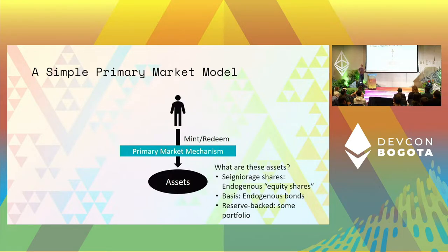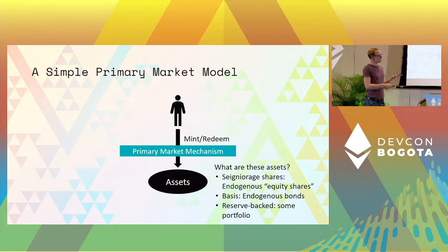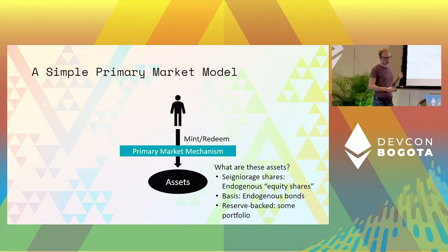What are these assets? Well, that depends on your design. It could be many different things. In a seigniorage share design, it's basically an equity share in a sense. For something like a basis design, it's something like a bond. And in a reserve-backed design, it's some portfolio of other assets. By the way, this is the design we are using for Gyroscope — it's reserve-backed.